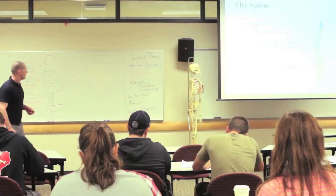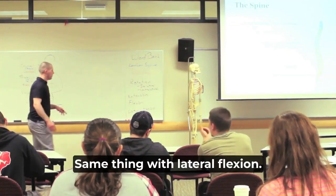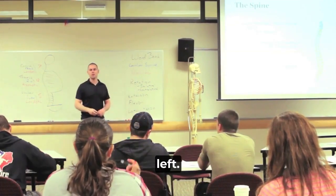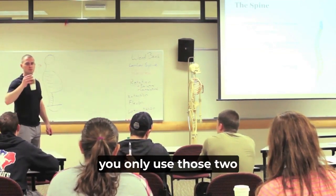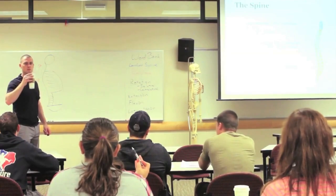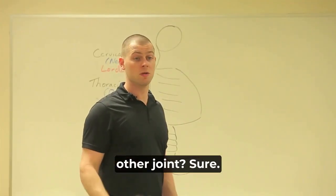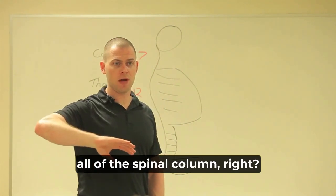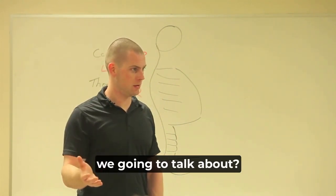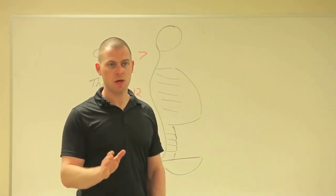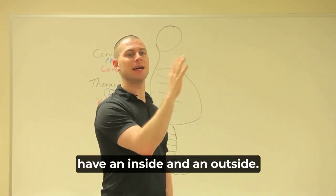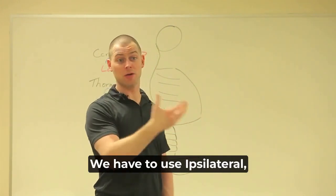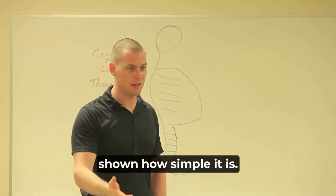So that's all of our joint actions — not that bad. Same thing with lateral flexion: lateral flexion is ipsilateral or contralateral, or just lateral flexion right and left. You can use ipsilateral and contralateral for any part of the spinal column. If we're talking about the shoulder, what types of rotation are we going to talk about? Internal and external rotation — we don't need those terms for the spine. When talking about something centered that doesn't have an inside and an outside or can't go toward the midline, we use ipsilateral, contralateral, or simply right and left.